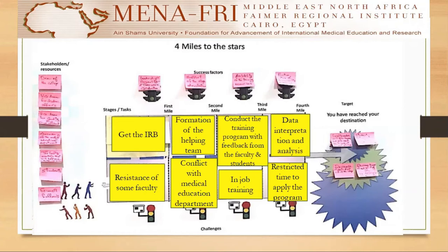For my project, I have short-term outcomes: for the faculty, they obtain desired knowledge and skills to conduct different activities in the college; and for the students, the student becomes satisfied with better learning. Then the intermediate-term outcomes include decrease in dropout of students from the college and decrease in turnover of faculty. And the long-term outcomes are to easily get accreditation and graduate good doctors for the future.